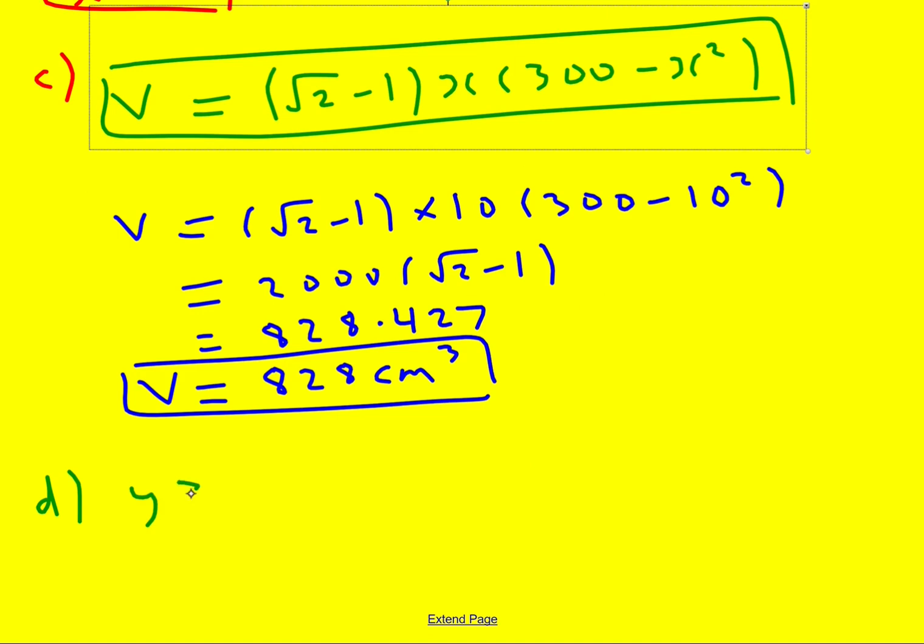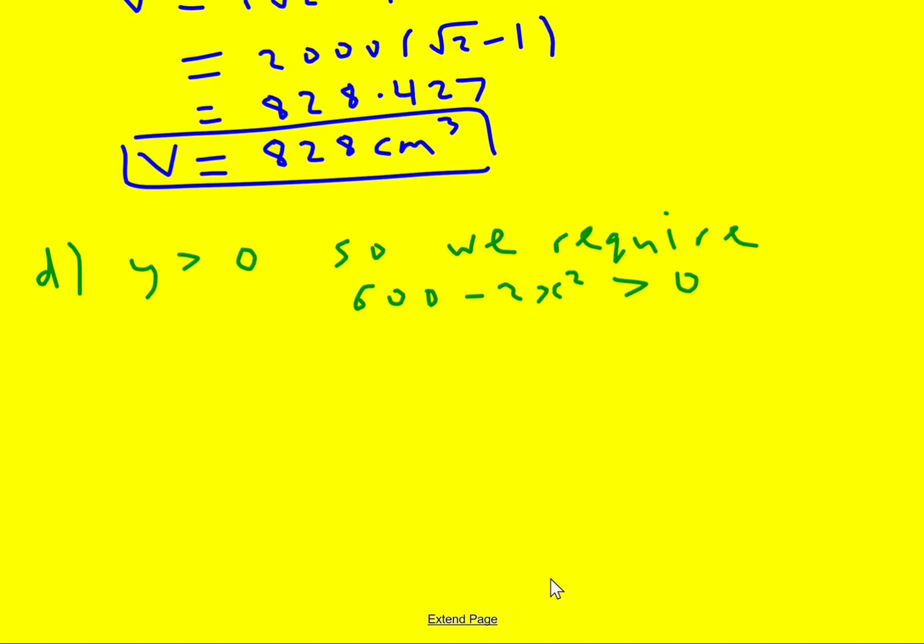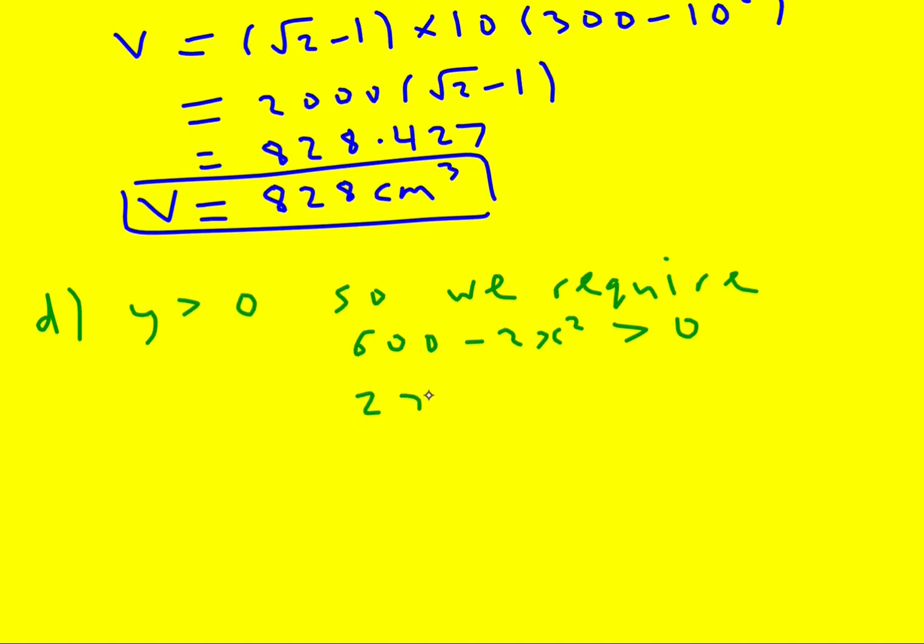So it must be that 600 minus 2X squared remains greater than 0. So Y greater or equal to 0. So we require 600, I mean, technically it doesn't make any sense if it's equal to 0. So technically 600 minus 2X squared must also be greater than 0. That means that 2X squared must be less than 600. Or X squared must be less than 300. Now we know that X is positive, so we don't need to think about the negative square roots or anything. It must be that X is less than root 300. But that is the answer to this question.